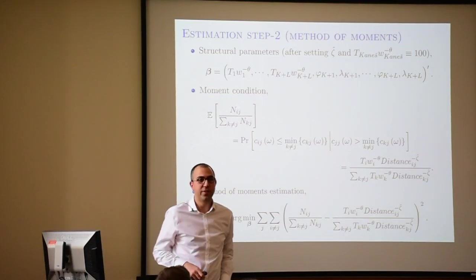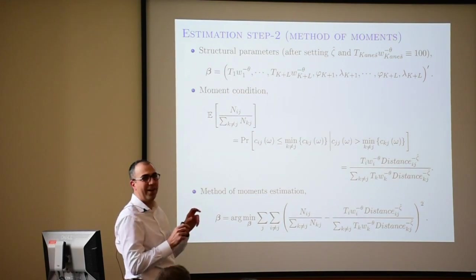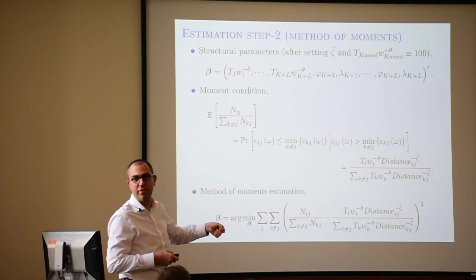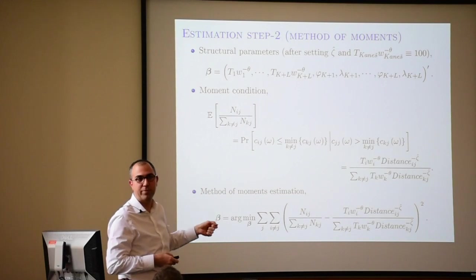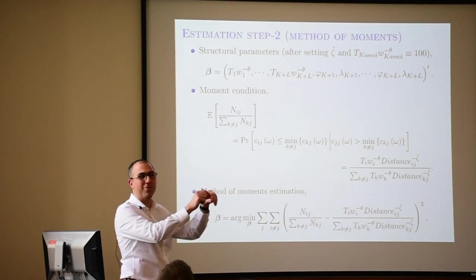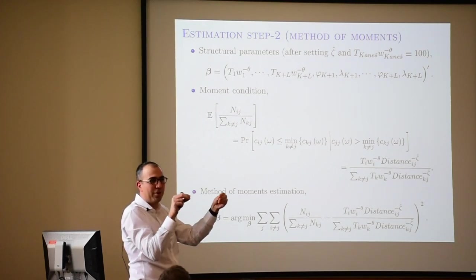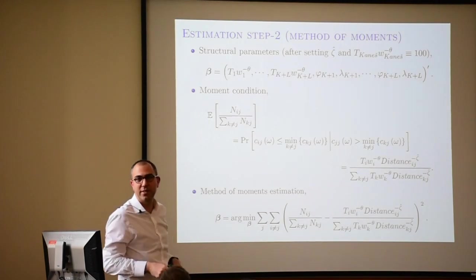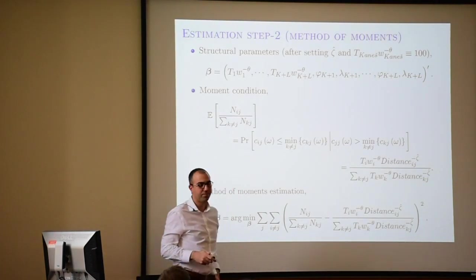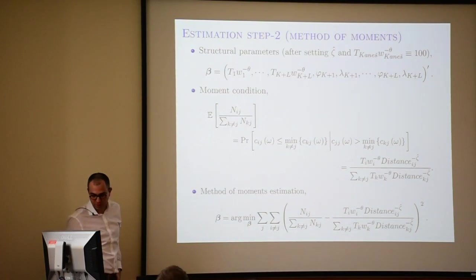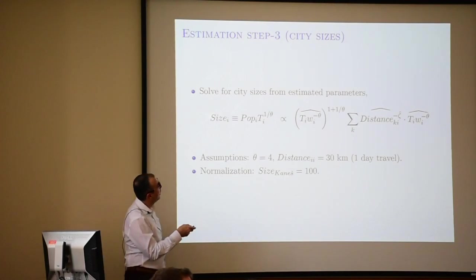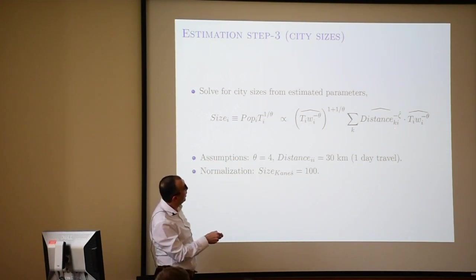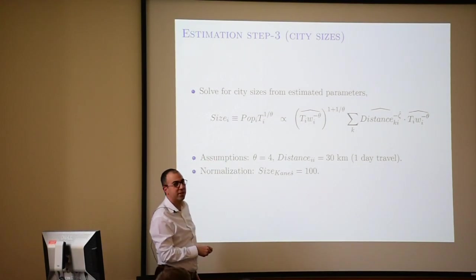I'll give a flavor of identification by fictitiously losing known cities and seeing how well the procedure recovers their places. We also did it with modern-day cities in Turkey, and it does pretty well — we lose cities one at a time, take the trades between them, and see how well we predict each one's location. The key takeaway is that you also need the model to recover the true size of a city by purging out the effect of its location.